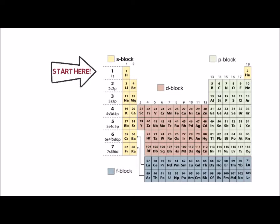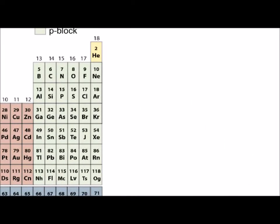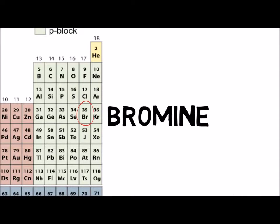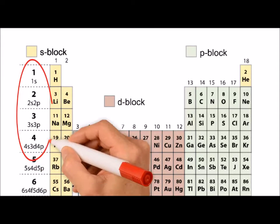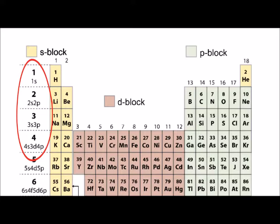Let's use it to write the electron configuration of a neutral bromine atom. A bromine atom has 35 electrons. Using the blocks in the periodic table, we can write the electron configuration of bromine as 1s² 2s² 2p⁶ 3s² 3p⁶ 4s² 3d¹⁰ 4p⁵.